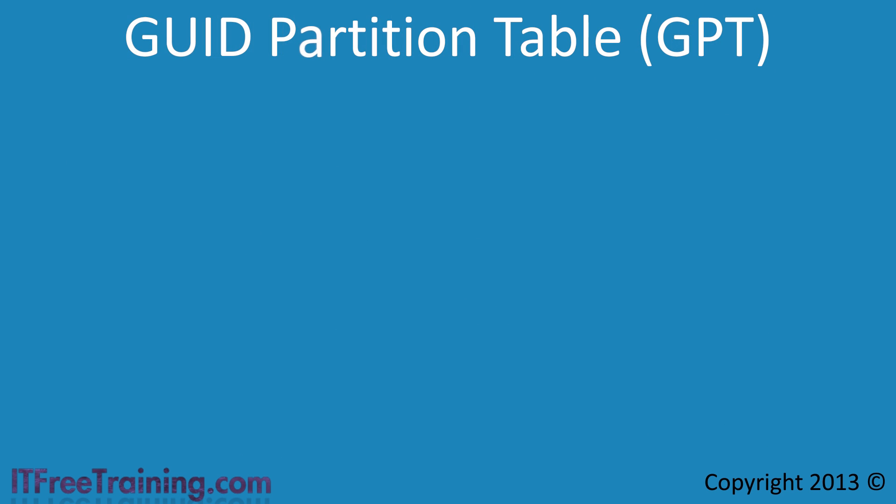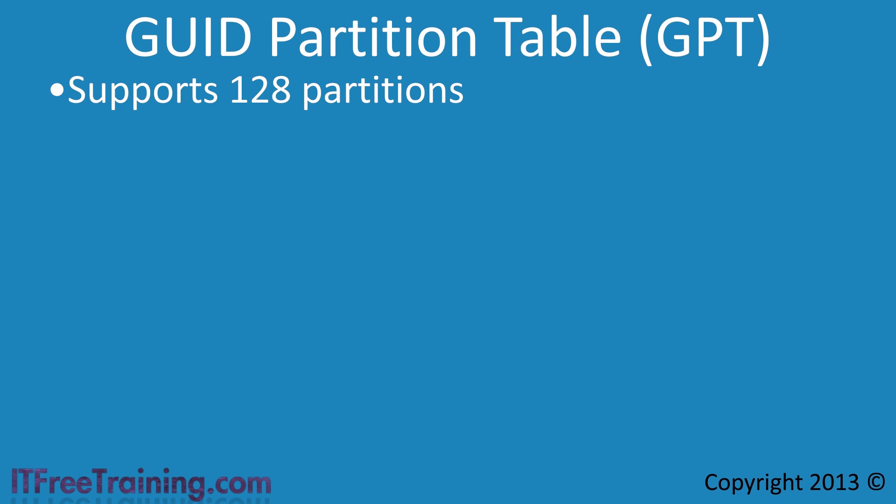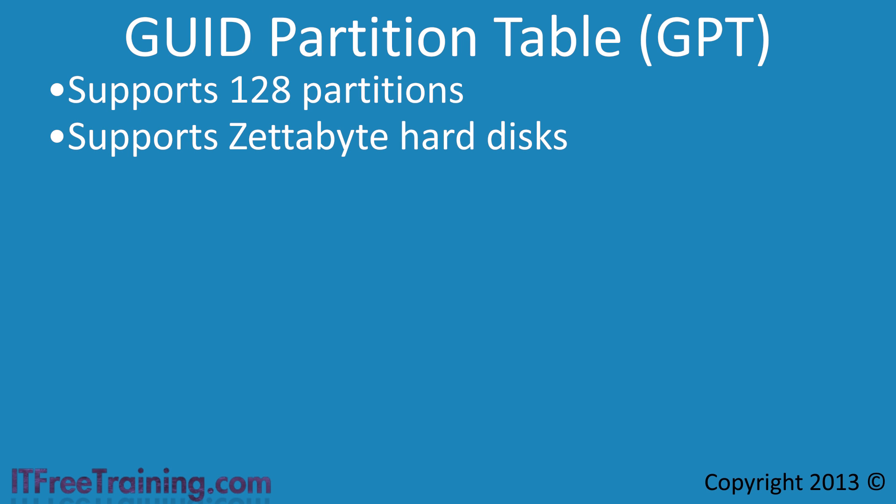The replacement for MBR is GPT, or GUID Partition Table. GPT supports 128 partitions without the need to change an existing partition into an extended partition like MBR requires. GPT supports hard disk sizes in zettabytes. The actual amount varies depending on what size the hard disk manufacturer makes the sectors on the hard disk, but either way, a zettabyte is a lot of data.